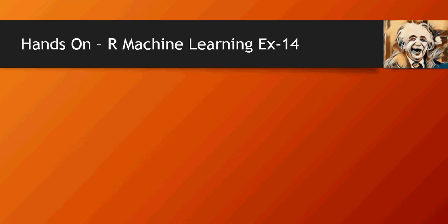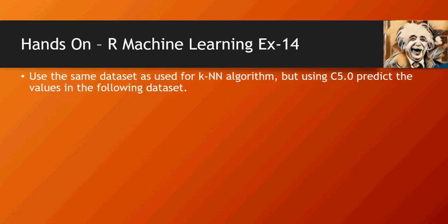Hello and welcome to another video of this machine learning do-it-yourself tutorials. In the last video we discussed C5.0 decision trees, so it's time for some hands-on exercises. Exercise number 14: use the same dataset as used for the KNN algorithm in exercise number 13, but using C5.0 to predict the values in the following dataset.